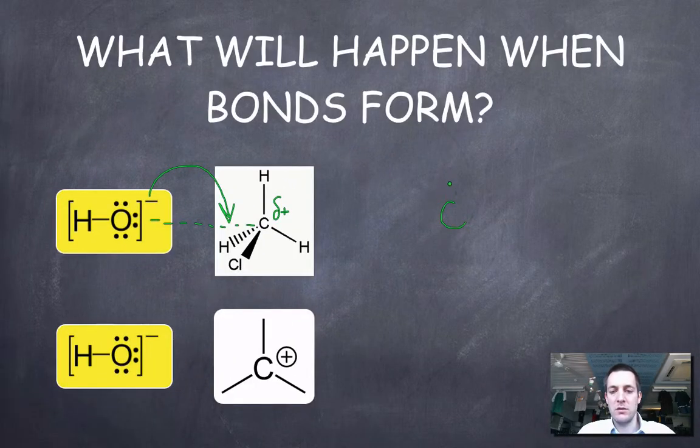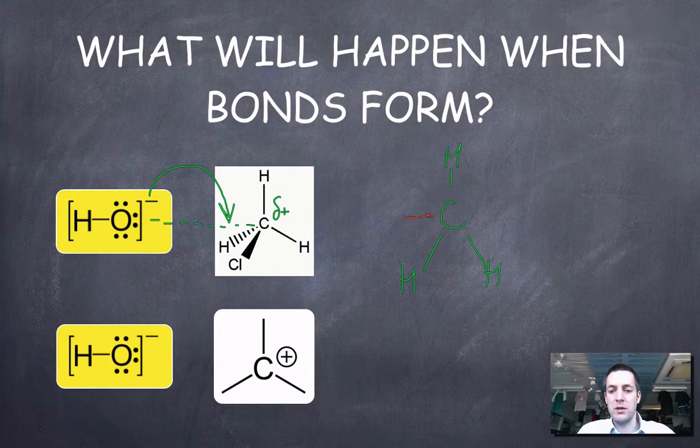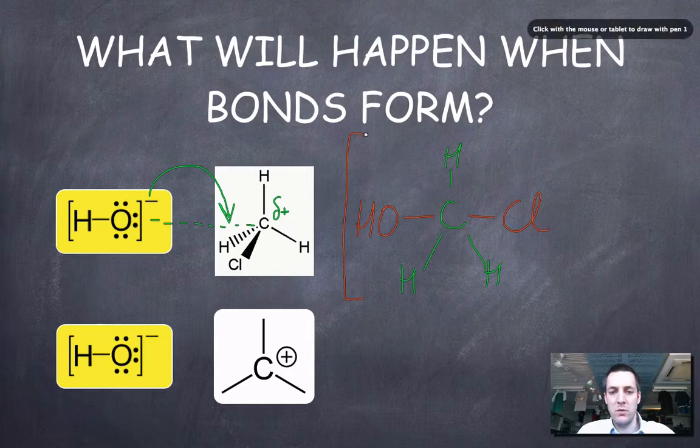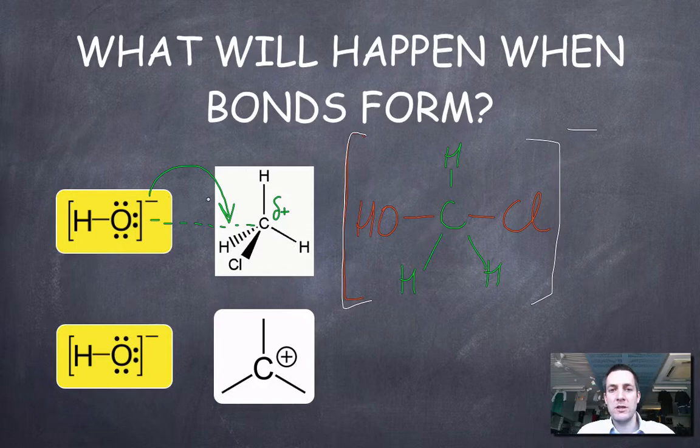It's got one to the nucleophile which maybe I'll put in a different color, and it's got one to this thing which we call the leaving group because that's about to leave. But this thing overall would now have, let me just put that in white. Just like with all ions we usually put square brackets around them like you can see with this hydroxide ion. This thing overall has a negative charge because you can't just magic this charge away.